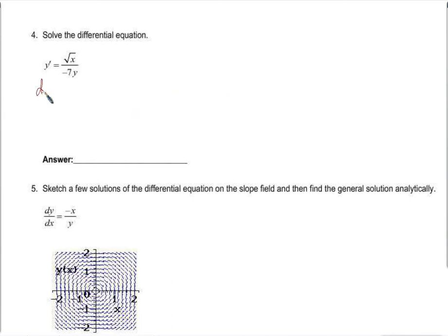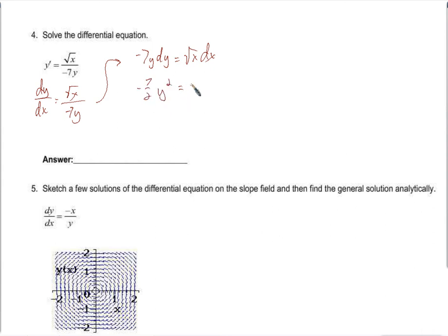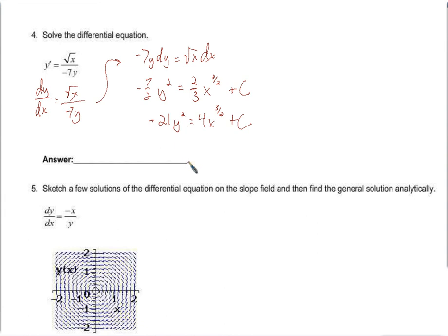To solve this differential equation, I write it as dy/dx equals square root of x over negative 7y. Separating variables: negative 7y dy equals root x dx. Taking the antiderivative: negative 7/2 y squared equals 2/3 x to the 3/2 plus c. Multiplying both sides by 6: negative 21y squared equals 4x to the 3/2 plus c. Since y is squared we leave it this way.